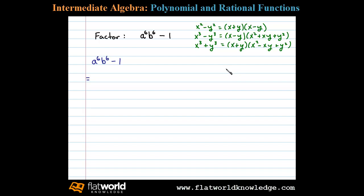To begin we need to determine what's being squared so we can apply the appropriate formula. So what squared will give me a to the sixth b to the sixth? Now after some thought we decide a cubed b cubed squared is a to the sixth b to the sixth. What squared will give me one? Well, one.